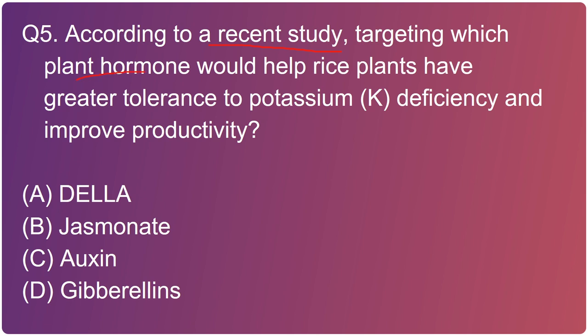Going to the next one: according to a recent study, targeting which plant hormone would help rice plants have greater tolerance to potassium deficiency and improve productivity? The right option is option B - jasmonate. A recent study at the National Institute of Plant Genome Research, New Delhi, suggested that targeting the hormone jasmonate would help rice plants have greater tolerance to potassium deficiency, in turn improving rice productivity.